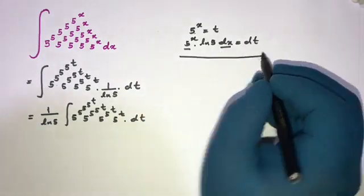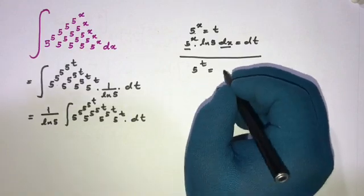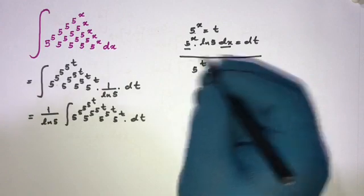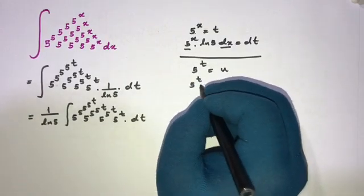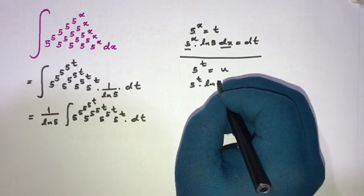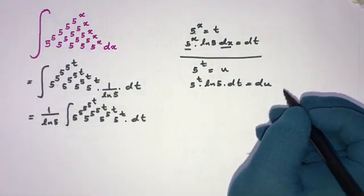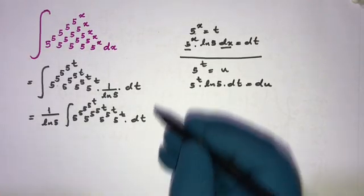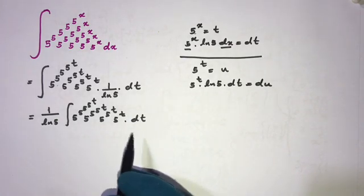For the second substitution, let 5^t equal u. Differentiating gives 5^t · ln 5 · dt equals du. This follows the same pattern, so we can already guess the final answer will involve repeated factors of 1 over ln 5.